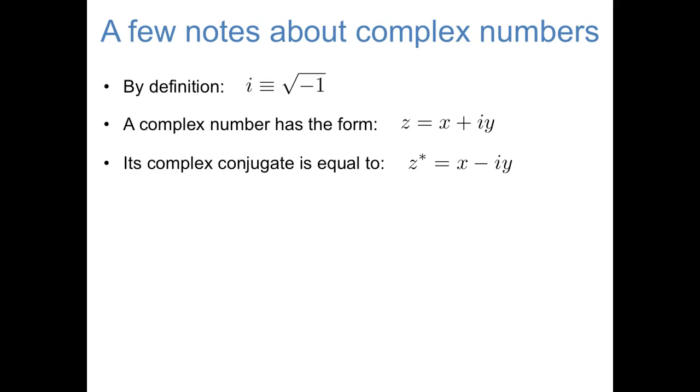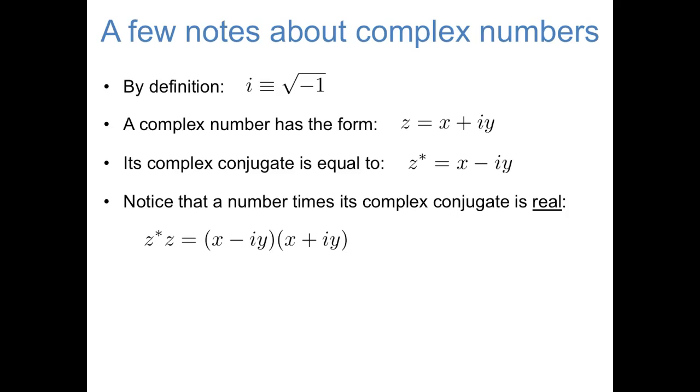The complex conjugate of x plus iy is, by definition, x minus iy. And if our complex number is called z, then the complex conjugate is often symbolized by z star. An important thing to know about complex conjugates is that a number times its complex conjugate turns out to be real. We can see this by multiplying x minus iy by x plus iy. If you multiply out all of those terms, you get x squared minus i squared y squared. And if we remember that i is the square root of negative one, this becomes x squared plus y squared, which is real.